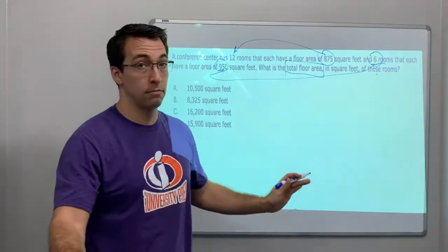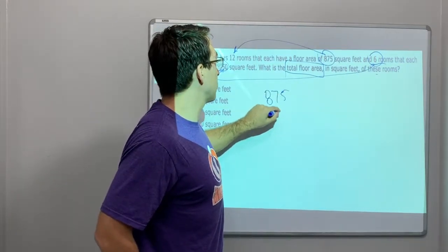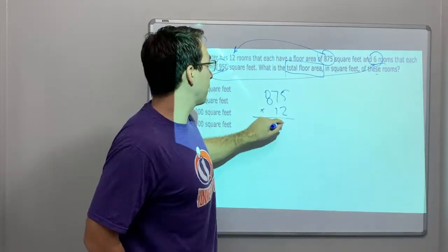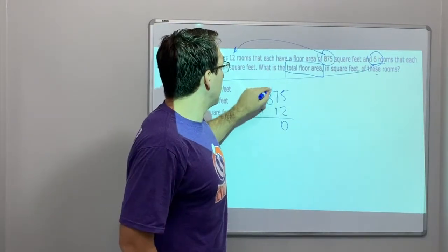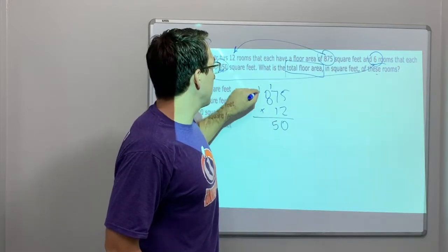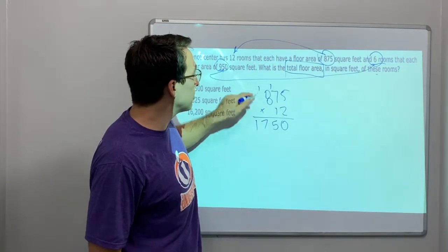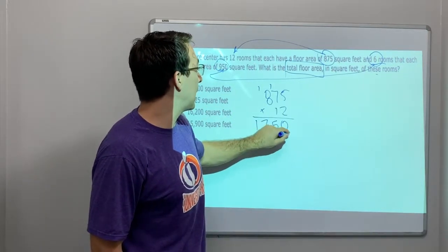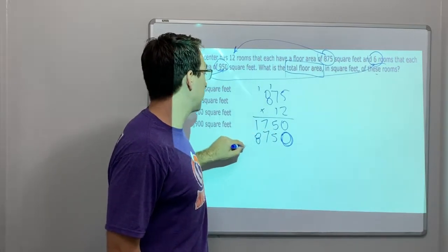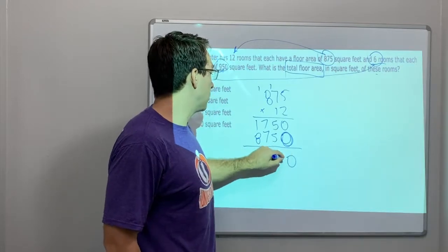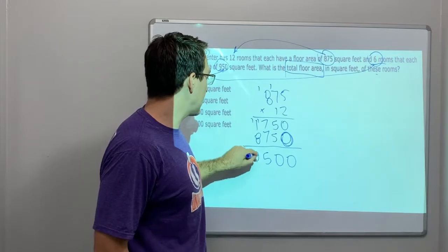Let's do 12 times 875. You can pause the video, do the work, and check your answer. 2 times 5 is 10; 2 times 7 is 14 plus 1 is 15; 2 times 8 is 16 plus 1 is 17. Notice my columns are straight. Then 1 times 875 shifted one place: 875. Adding together: 10,500.